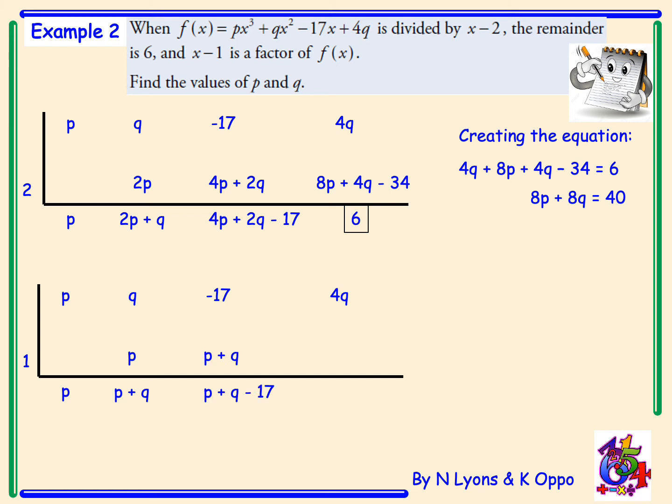add negative 17, p plus q minus 17, multiply it by 1, and then finally, as x minus 1 is a factor, we automatically put the remainder as 0. Now, we can create the equation 4q plus p plus q minus 17 equals 0, simplifying to p plus 5q is equal to 17.